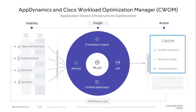When we look at our vision for AIOps going forward, we really view this vision in three distinct pillars: visibility, insight, and action. For visibility, we can see that the application and business layer, infrastructure, network, and security — the visibility into each of these layers is absolutely critical. Rather than have disparate systems or disparate services that provide this visibility, AppDynamics is really your single plane of glass that provides holistic visibility across public and private cloud environments.